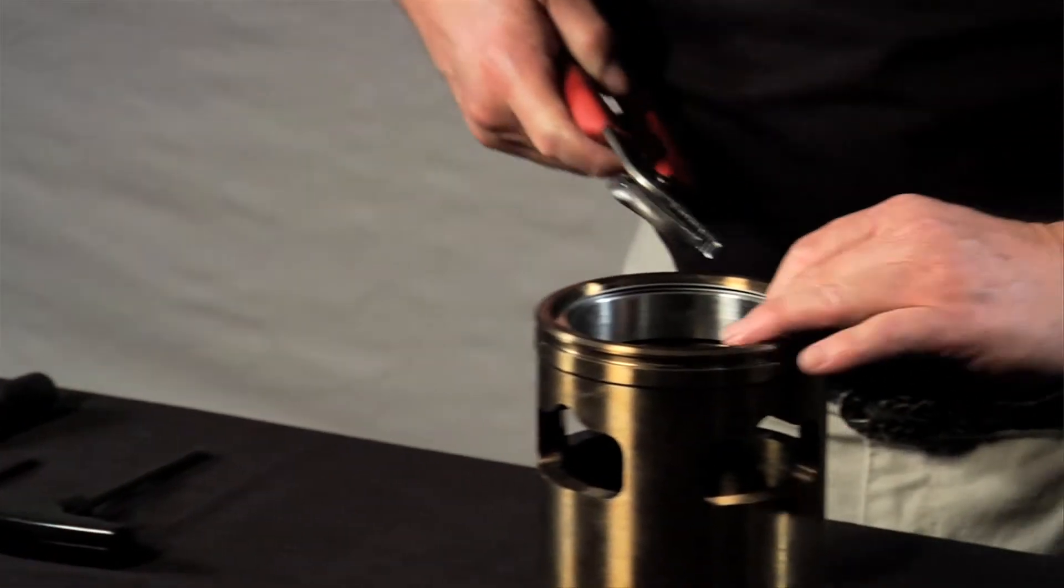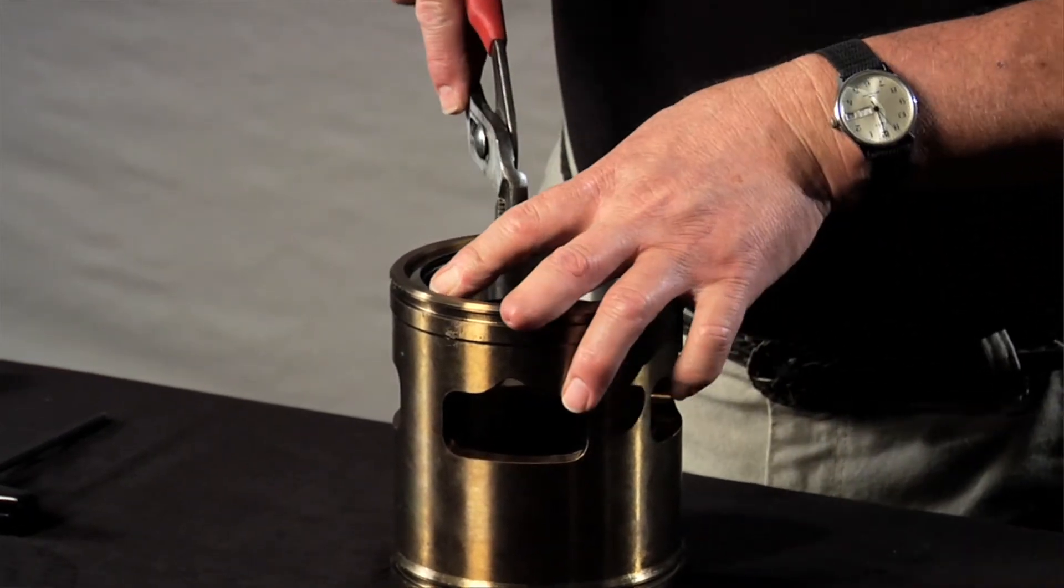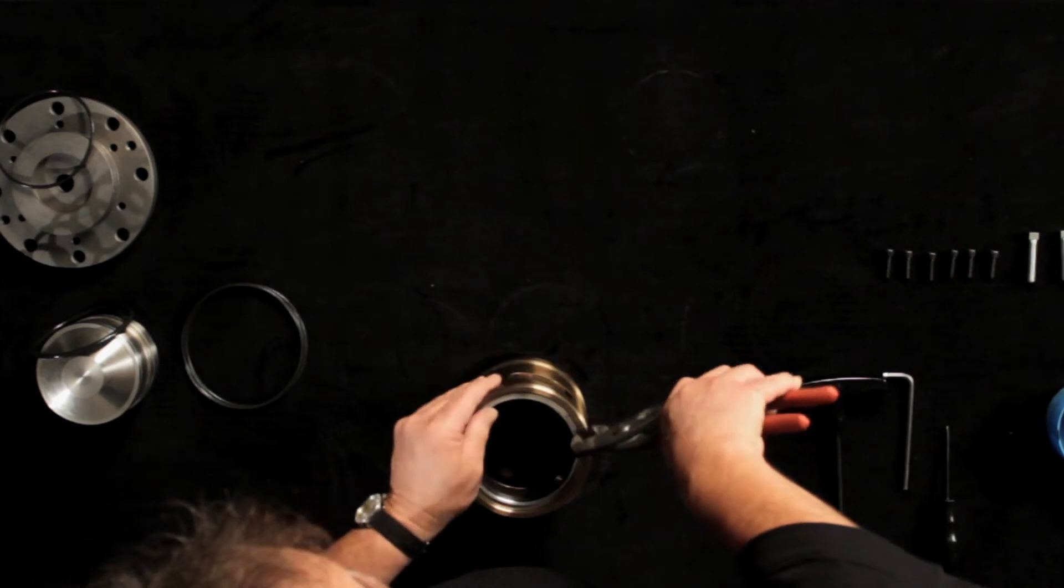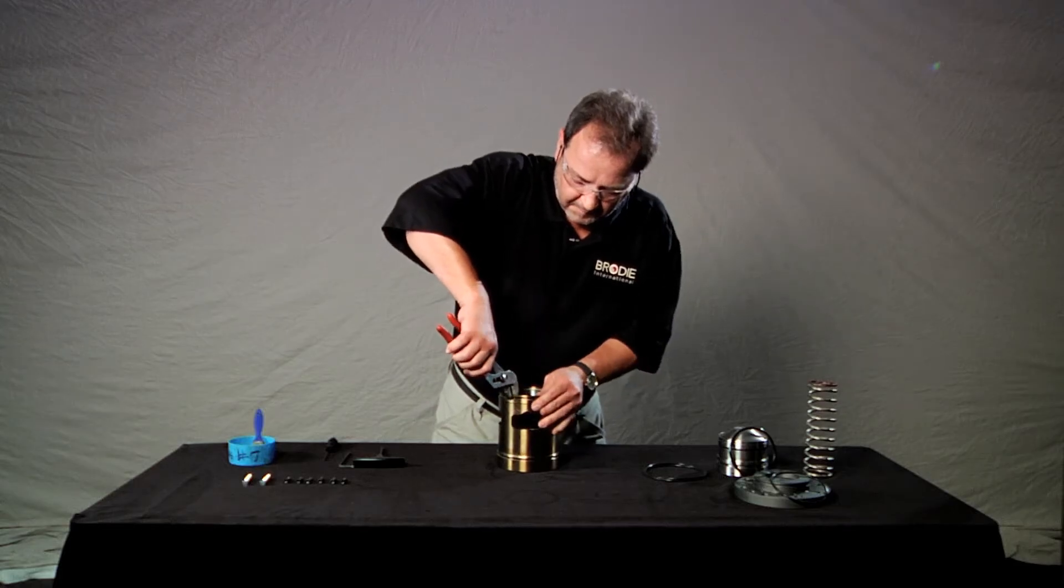After the retaining ring is positioned by hand, use a pair of channel lock pliers to carefully seat the ring tightly in the groove. Try not to mar the outside cylinder finish during this process.